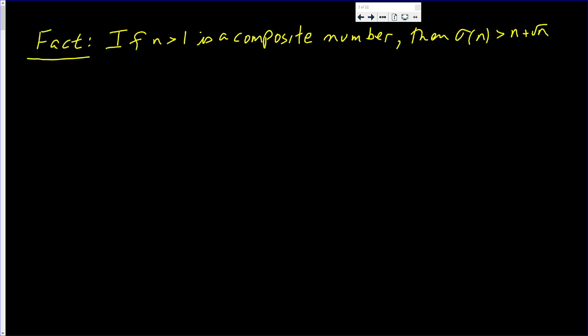In this video, we're going to prove the following fact: If n is bigger than 1 is a composite number, then σ(n), that is the sum of all the divisors, must be greater than n plus the square root of n.